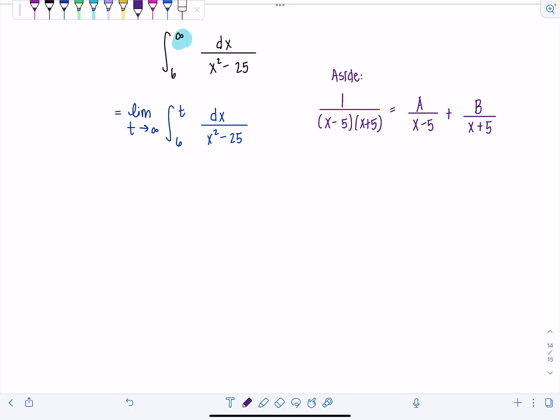And then next step, I'm going to multiply everything through by x minus 5 x plus 5. I won't write that out. We'll just do it in our heads. So we have 1 equals A times x plus 5 plus B times x minus 5. I'll do one method I haven't done before for you. Let's let x equal negative 5. If I do that, then we have 1 equals A times 0 plus B times negative 10, which tells us that B is equal to negative 1 tenth.